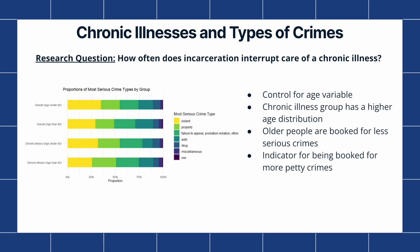We also wanted to explore the research question: how often does incarceration interrupt care of a chronic illness, such as diabetes and hypertension? We wanted to see if there were differences in the type of crime people are booked for in the priority chronic illness group, which includes six chronic illnesses, versus the data overall. We controlled for the age variable since people with chronic illnesses have higher age distributions. The bars are split for under and over age 40 in both the overall data and the chronic illness group. From the graphs, we can see that crime type varies mostly by age, and older people, who are represented more in the chronic illness group, are booked for less serious crimes.